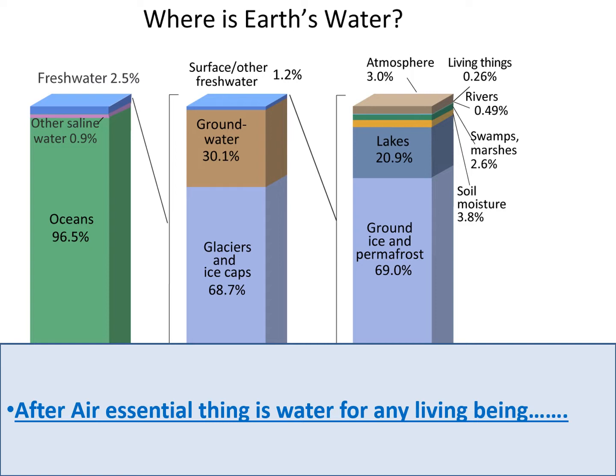Without water we cannot survive — we can only survive within days without water. So where is this water on the Earth's surface? Three-quarters of the Earth is covered by water, but 96.5% of that water is occupied in the oceans only. Just 2.5% fresh water is available.